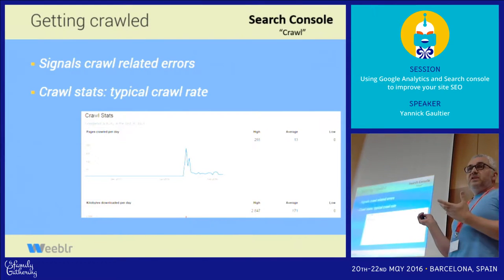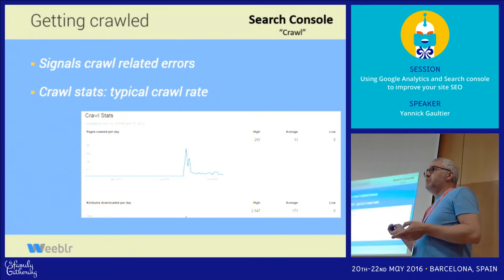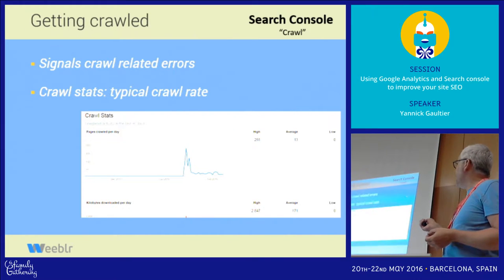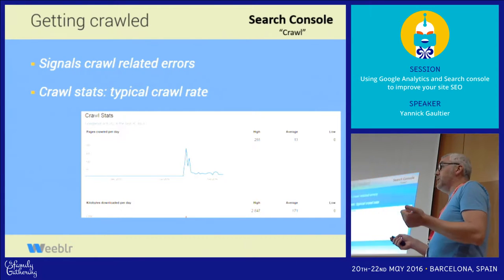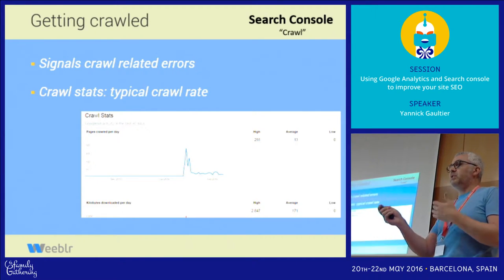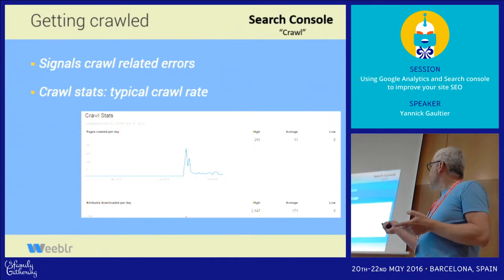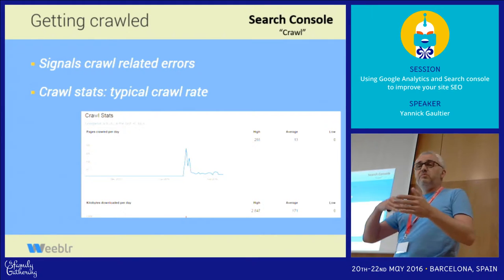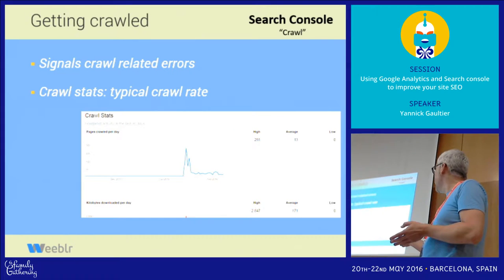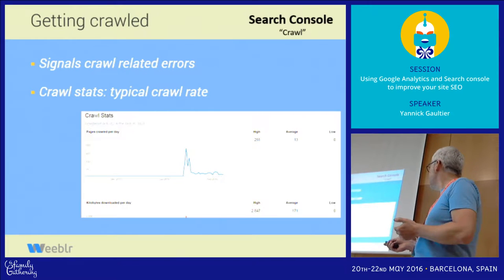The first tool we want to use is the Crawl section of Search Console. This will tell you any errors in your pages they found. If you have 404 errors, you have to fix that. The crawl area also gives you crawl stats, most notably the crawl rate — how many pages per day or per period of time have been crawled. That's where you want to look for big changes.